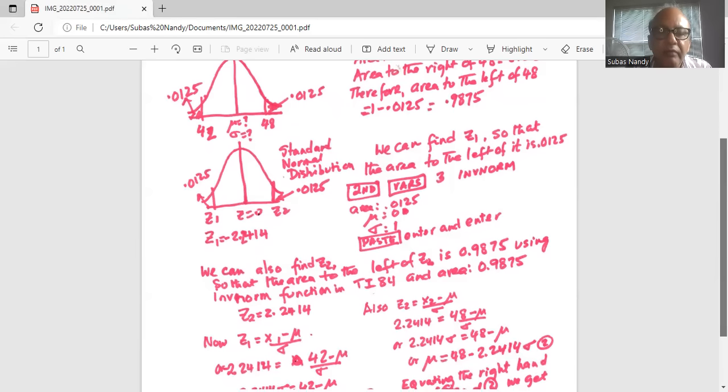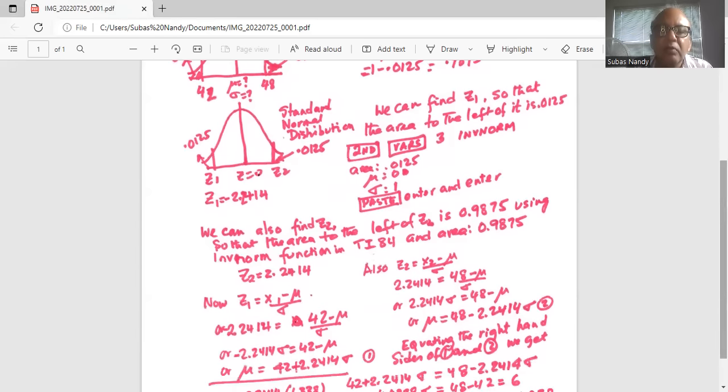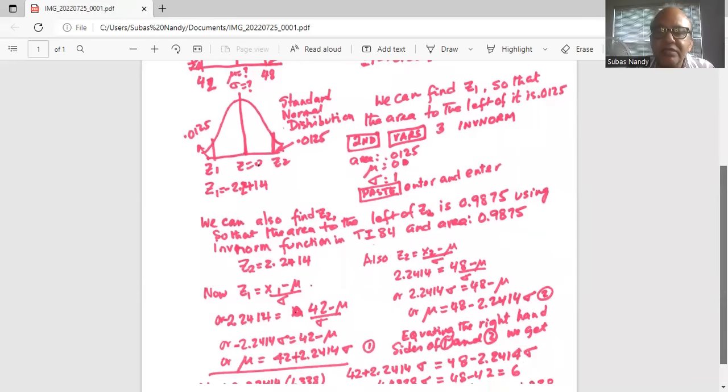Now for Z1, we know it is minus 2.2414 equals X1, which is 42, minus mu divided by sigma. Another equation for mu is 42 plus 2.2414 sigma. Notice in equations 1 and 2, left hand sides are both equal to mu, so we can equate the right hand sides.